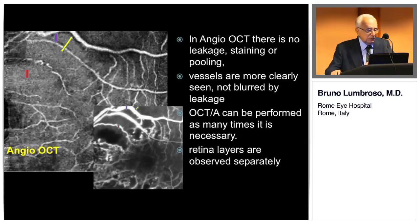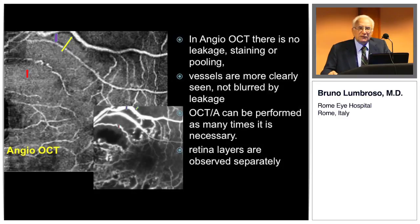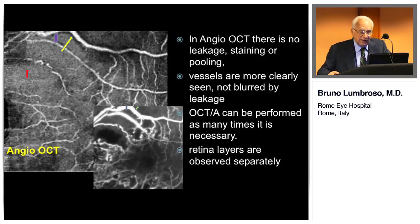On top is an Angio OCT — there is no staining, we see exactly the blood column. Below, the fluorescence angiograph shows staining making the vessel appear much larger, making it very difficult to understand the blood circulation. Vessels are more clearly seen in OCTA and not blurred by leakage. OCTA can be performed as many times as necessary.